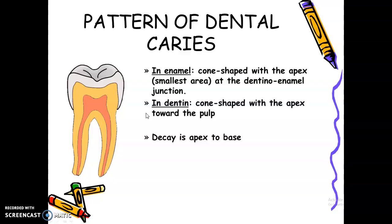You cannot say the relationship is base to apex — base of the triangle in the dentine to apex of the triangle in the enamel. No. We always describe the relationship starting from the enamel.